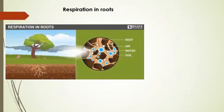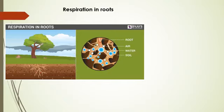Now, respiration in roots. You can see in this diagram — these are the roots, and they are present inside the soil. Exchange of gases in roots takes place by diffusion from the air present in between the soil particles. Oxygen diffuses into the root hairs and passes into the root cells, and carbon dioxide comes out.